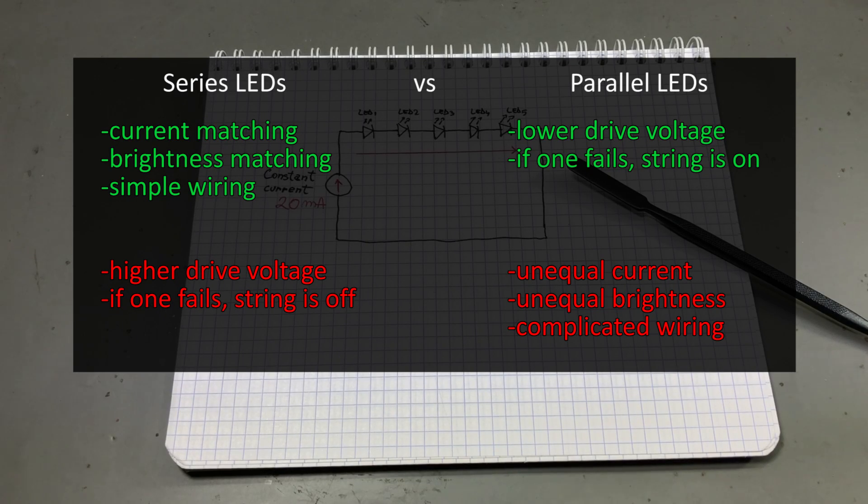In parallel connection we need a lower drive voltage and if one LED fails the other still light up. But we get some disadvantages, we have unequal current, unequal brightness and the wiring is more complicated in a parallel configuration.